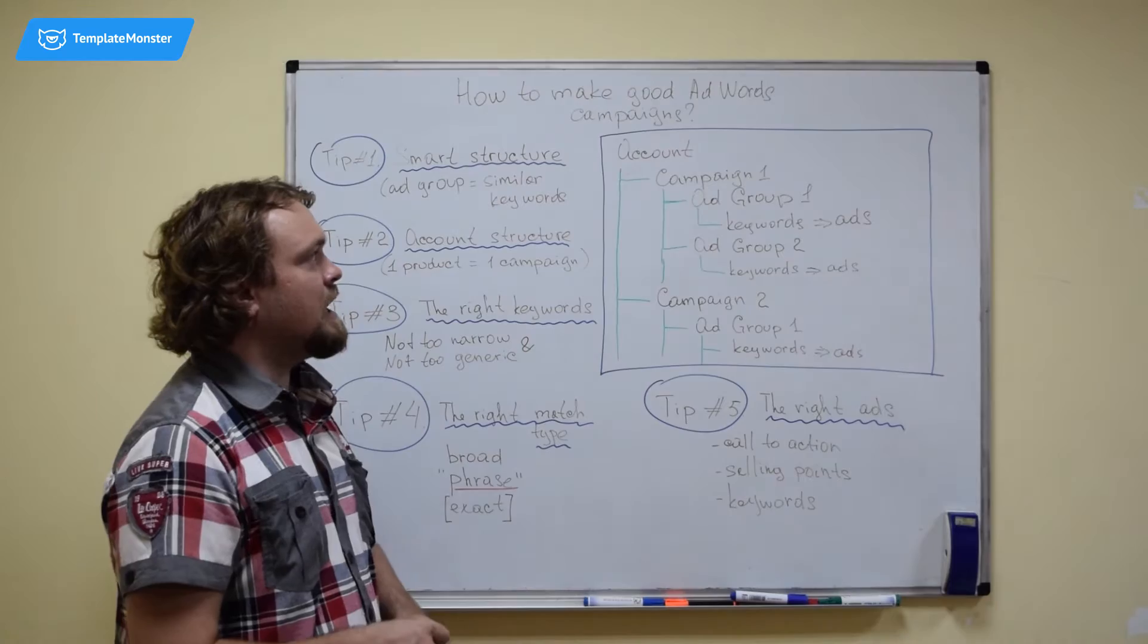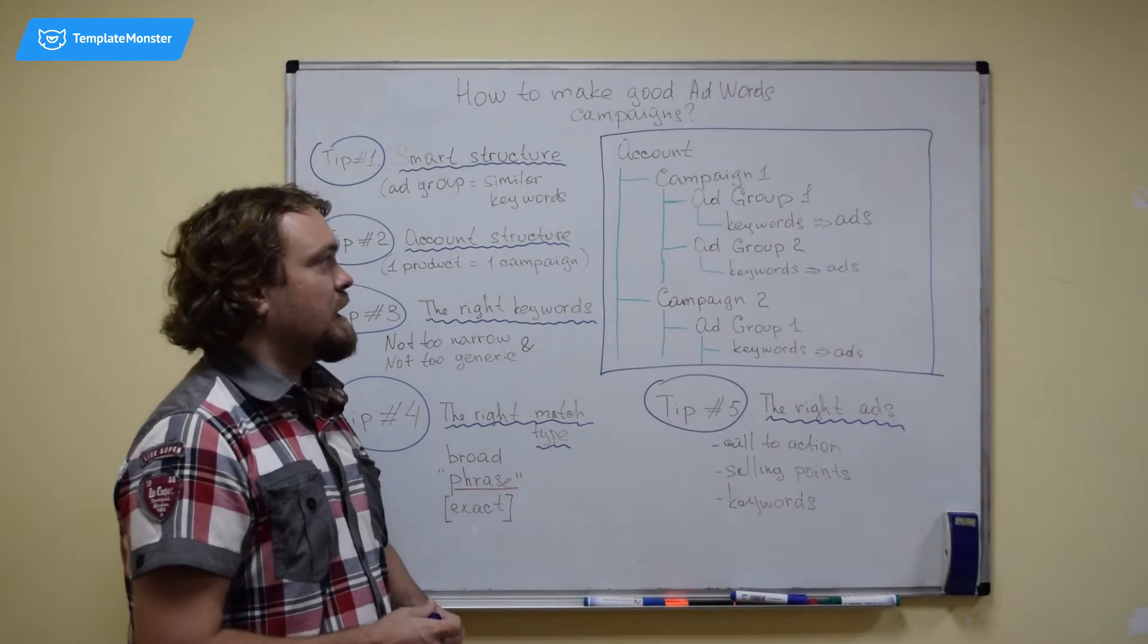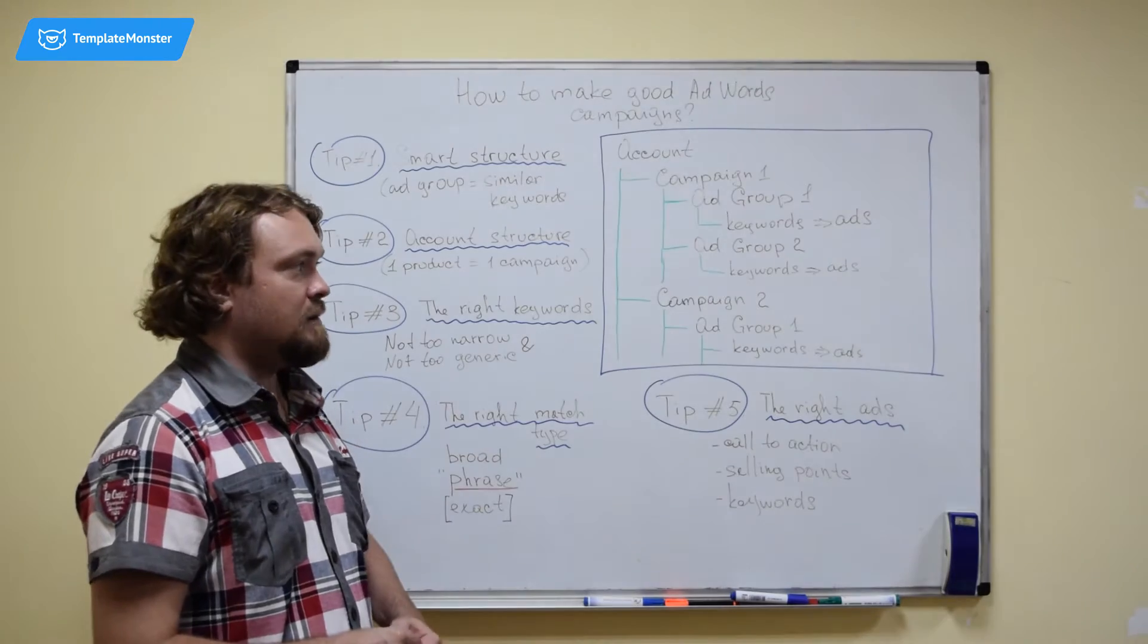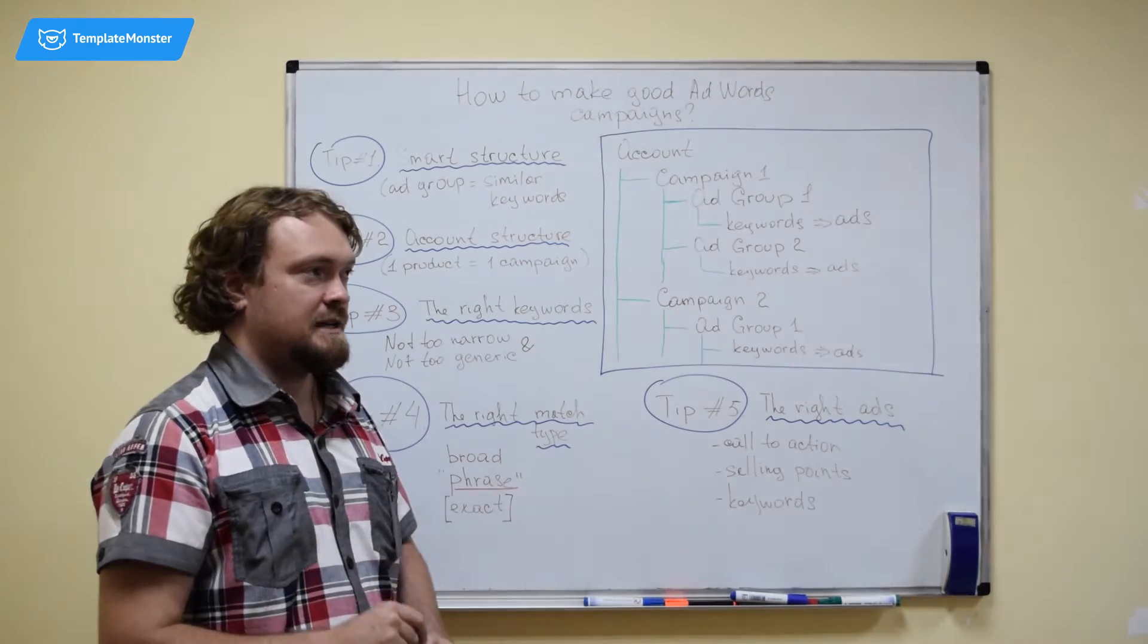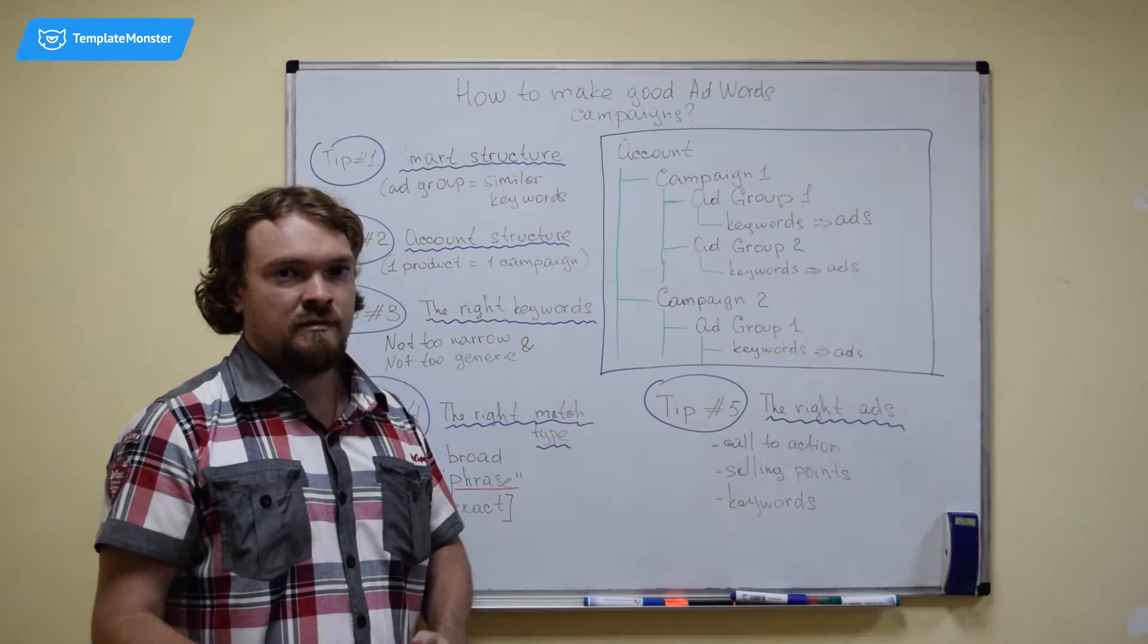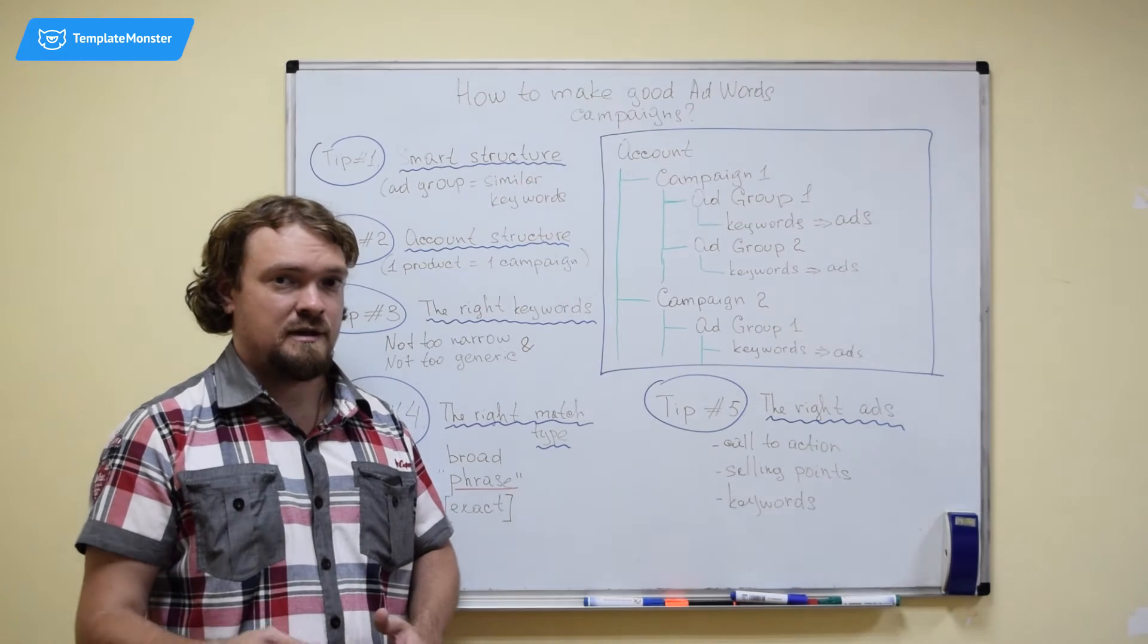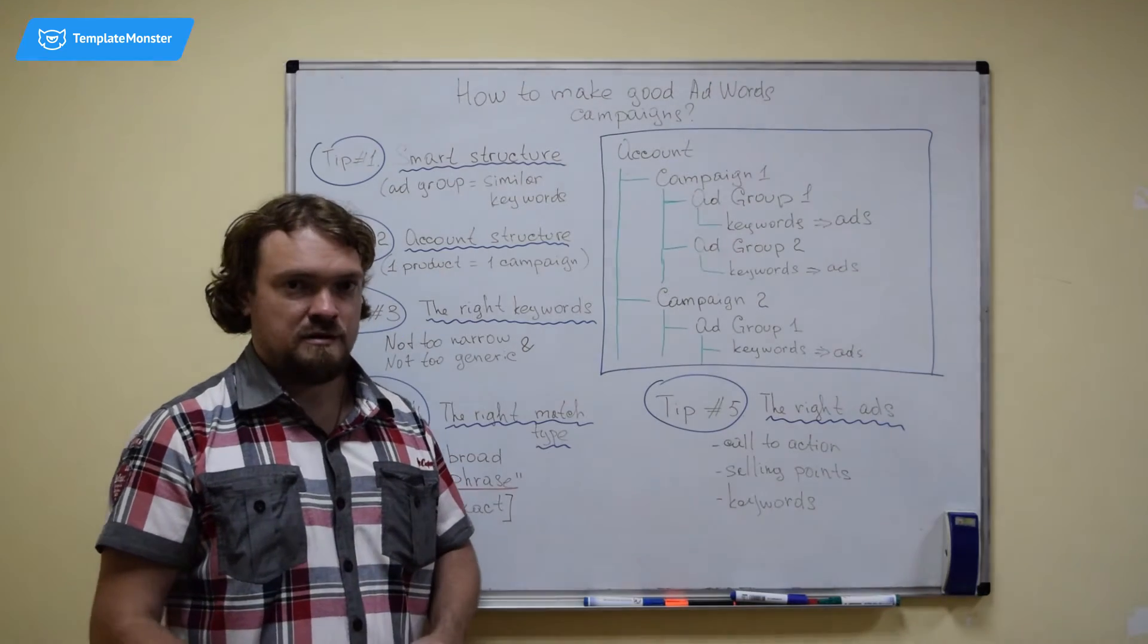Now a quick reminder on how a typical Google AdWords account is structured. Within your account, you may have a number of advertising campaigns. Within each campaign, you have a number of ad groups and each ad group has keywords and ads. And the important part here is that whenever people search for any keyword from your ad group, they will be able to see any ad from this group. So you want to make sure that the keywords in your group are pretty similar and that it's okay if people will see the same ads for whatever keyword they search for in this group.